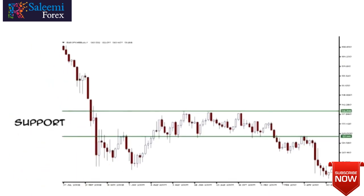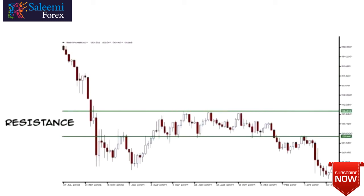Support is the likely low price where we want to buy the currency pair to open our position. Resistance is the likely high price where we want to sell the pair, close our position, and take profits.